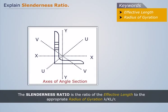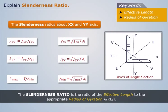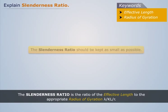A section asymmetrical about the centroidal axis will bend about the principal axis VV, for which the radius of gyration is minimum. On the other hand, a section symmetrical about both centroidal axes, or even with one axis of symmetry, will bend about one of the centroidal axes, giving a lesser radius of gyration.